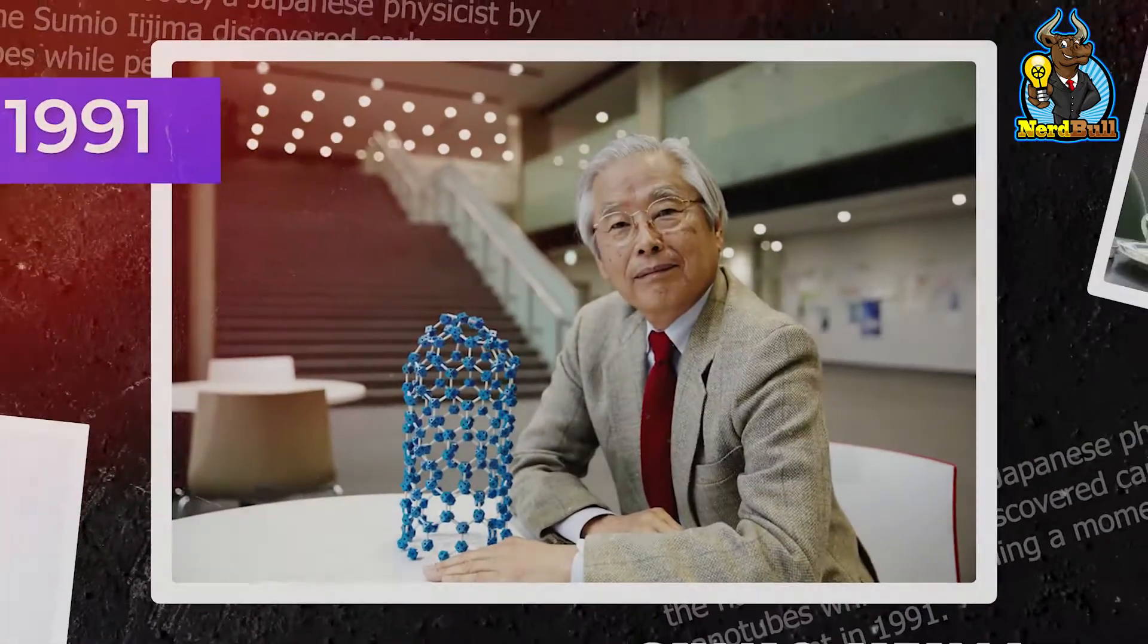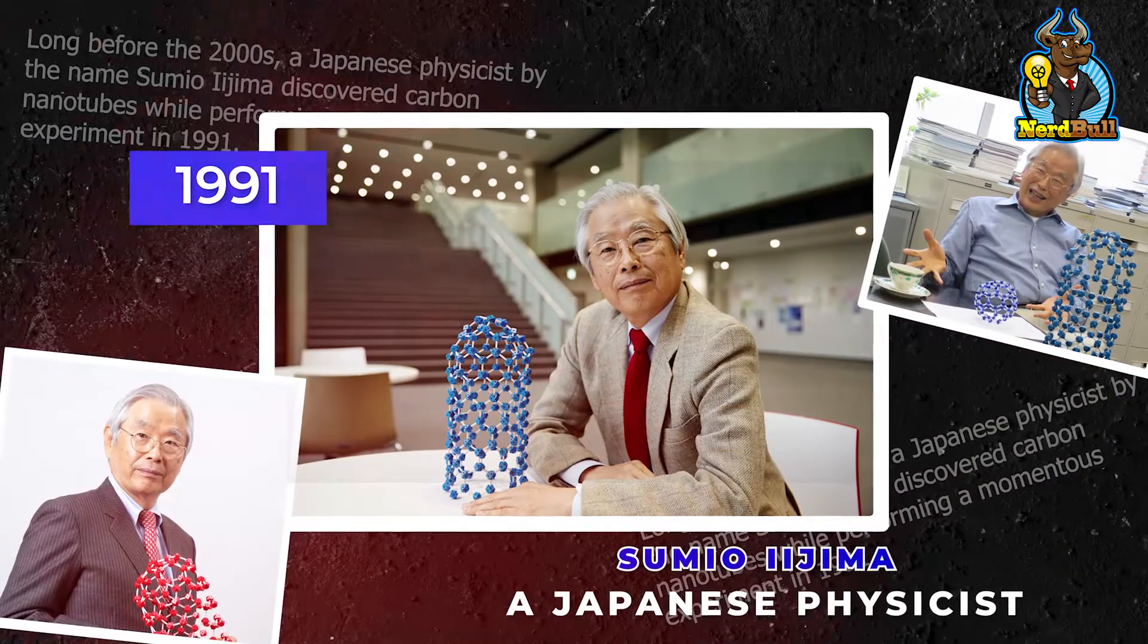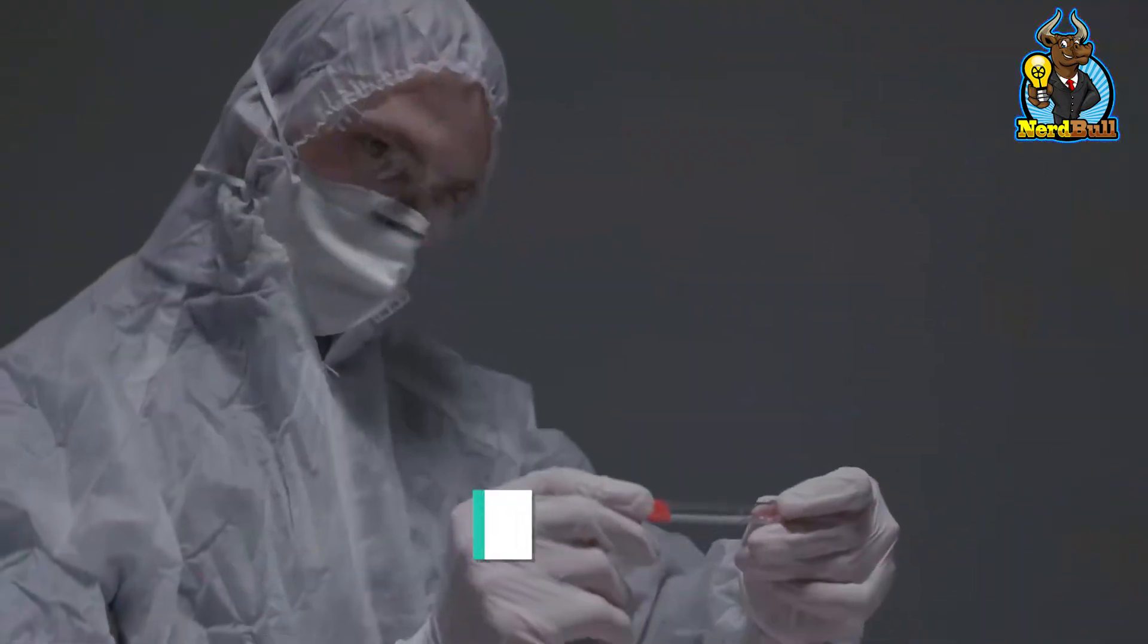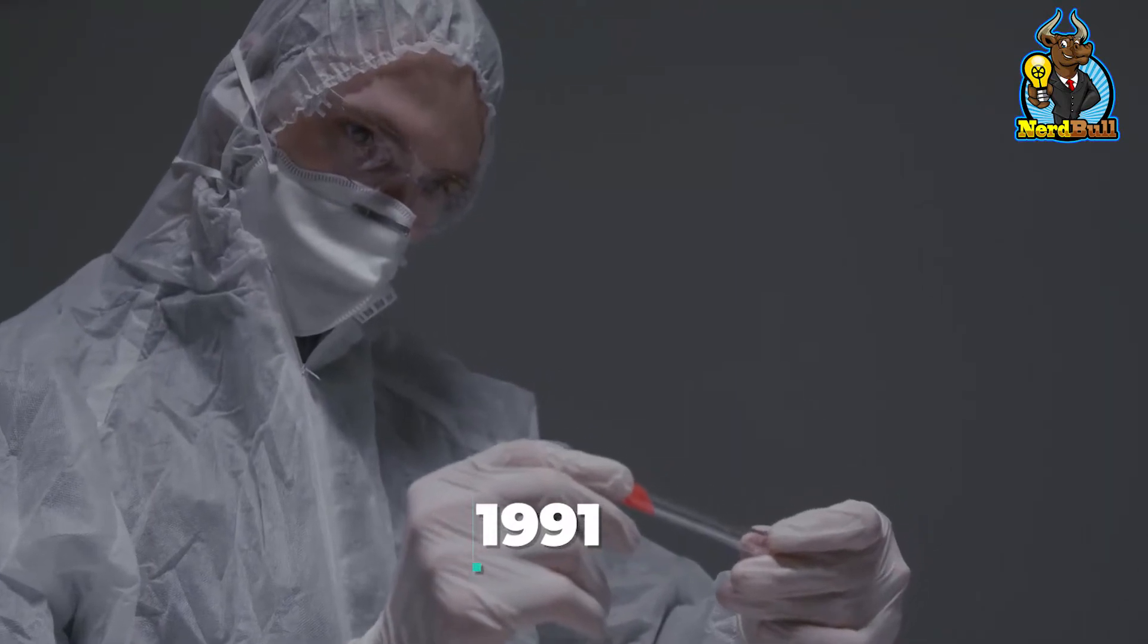Long before the 2000s, a Japanese physicist by the name Sumio Iejima discovered carbon nanotubes while performing a momentous experiment in 1991.